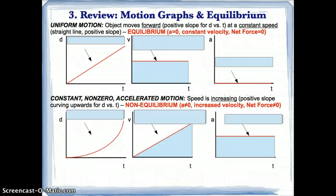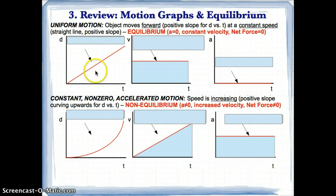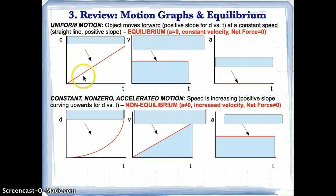Let's review motion graphs and equilibrium. An object moves forward during uniform motion, so it's a positive slope for d versus t as a straight line, meaning it moves at a constant speed. If you have an object moving forward with a positive slope at constant speed — a straight line for d versus t — then you know you have equilibrium.